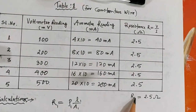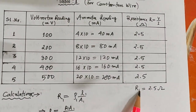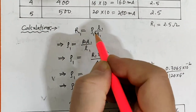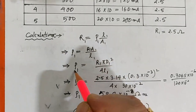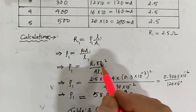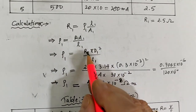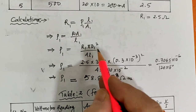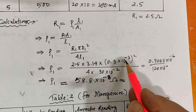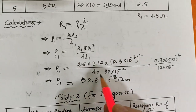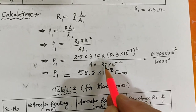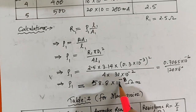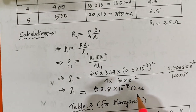The mean resistance of the constantan wire comes out to be 2.5 ohms. Then rho 1 equals R1 times pi times D squared divided by 4L. Substituting values: R1 equals 2.5, pi equals 3.14, diameter D equals 0.3 into 10 to the power minus 3 m, L equals 30 cm equals 30 into 10 to the power minus 2 m. After solving, rho 1 equals 58.8 into 10 to the power minus 8 ohm meter. This is the resistivity of the constantan wire.